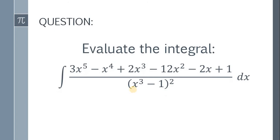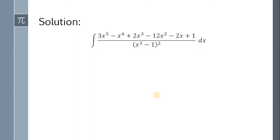Here's the question. Evaluate the integral of 3x raised to 5 minus x raised to 4 plus 2x cubed minus 12x squared minus 2x plus 1, all over x cubed minus 1 quantity squared, dx. And if you want to try this problem, just pause this video. And if you're ready, here's the solution.